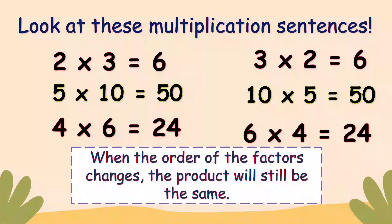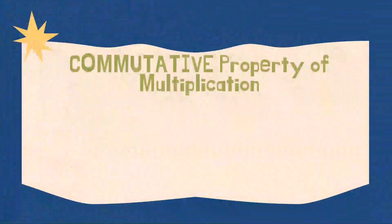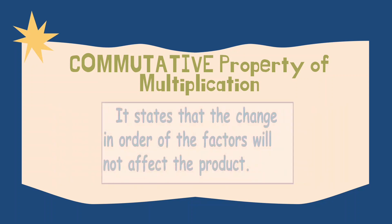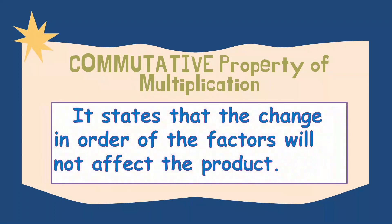When the order of the factors changes, the product will still be the same — the product is not affected. That is what we call the commutative property of multiplication. It states that the change in order of the factors will not affect the product.